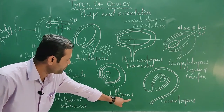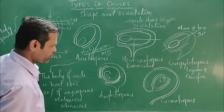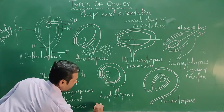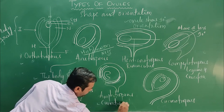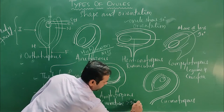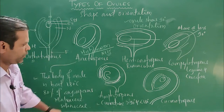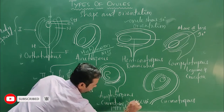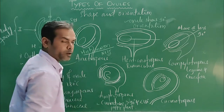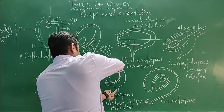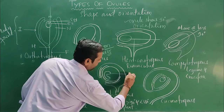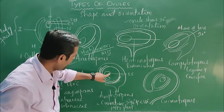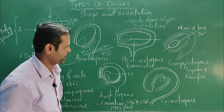The fifth type is the amphitropous ovule. In this type, the ovule shows bending or curvature more than 90 and less than 180 degrees. This type is found in poppy plants. Importantly, as the body of the ovule shows curvature, the embryo sac also shows curvature along with it.